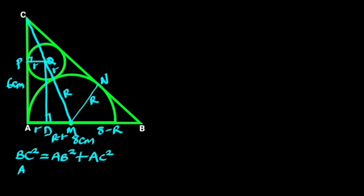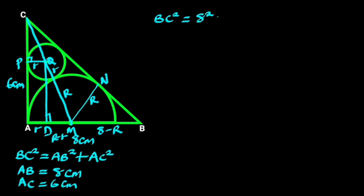AB equals 8 centimeters and AC equals 6 centimeters. Substituting these values in the formula gives us BC² equals 8² plus 6². 8² is 64 and 6² is 36. So BC² equals 64 plus 36.